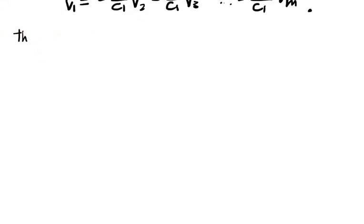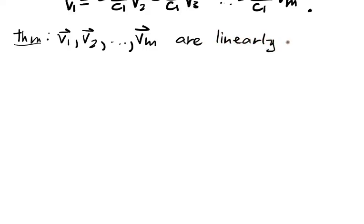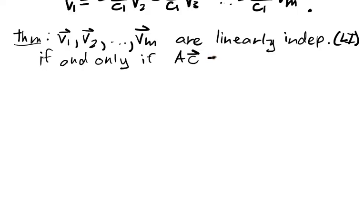So this theorem is: V1, V2, all the way up to Vm are linearly independent, and I'll start writing LI because this is a long thing to write out, if and only if AC equals 0 has only one solution. And of course this has a solution, the zero vector always works. And remember A is just the matrix obtained by joining all the Vi's as columns in a matrix.